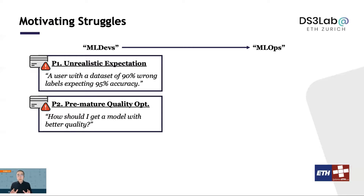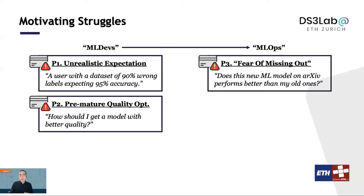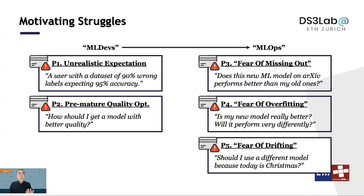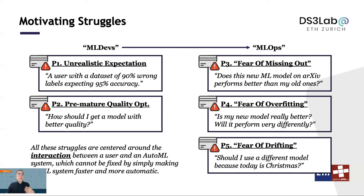Users constantly face new machine learning technologies that they hope to integrate into their applications. But on the other hand, they often worry about whether the improvement they get in this continuous development process is overfitting or not. They also need to worry about the risk of unknown data distribution drifting. If you look at all of these struggles, they are centered around the interaction between a user and the AutoML system, and many of them will not get any better by simply making a machine learning system faster and more automated.